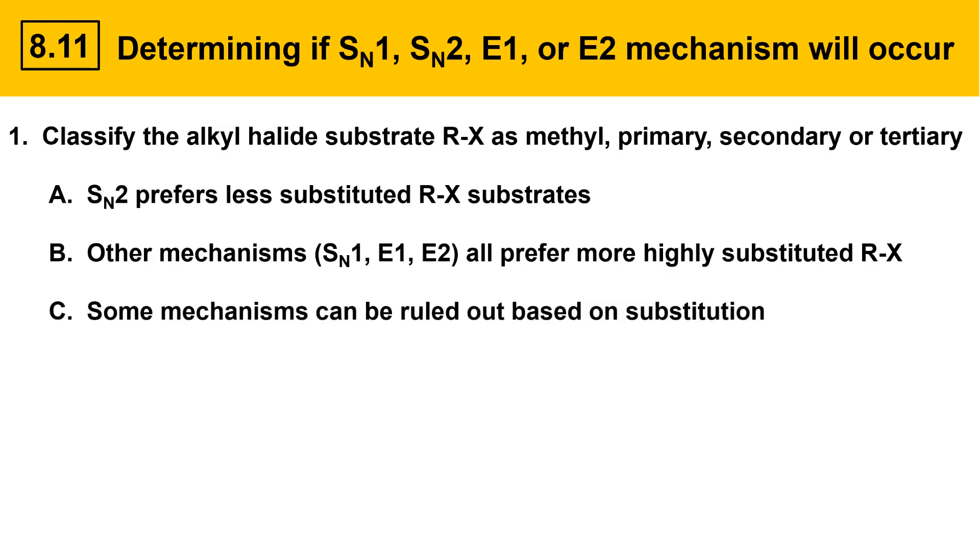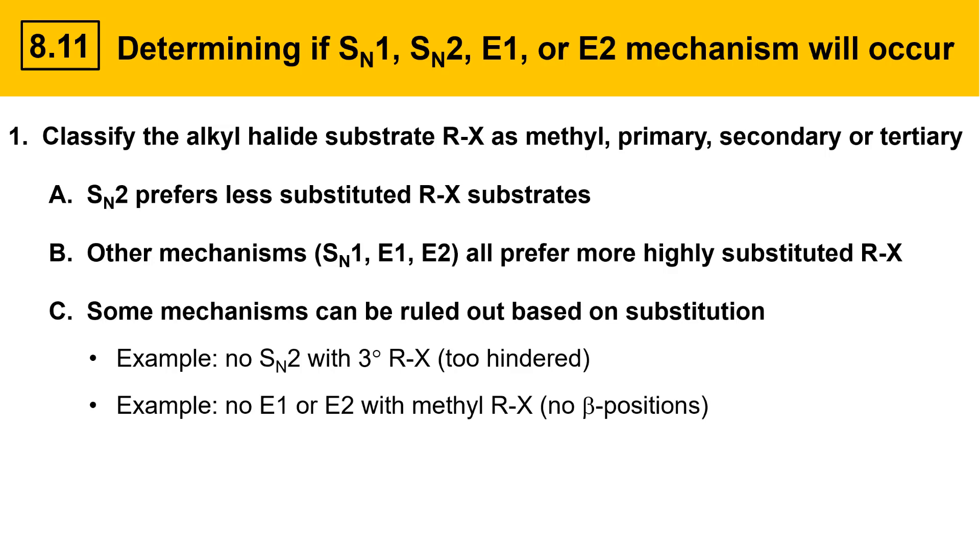Some mechanisms can also be ruled out based on substitution. For example, the SN2 reaction won't occur with tertiary R-X because they're too hindered. Another example is that E1 and E2 reactions with methyl halides won't occur because there are no beta positions to form a double bond. SN1 and E1 reactions are unlikely with methyl and primary alkyl halides because they produce very unstable carbocations. So, classifying the alkyl halide substrate can point you in the right direction.